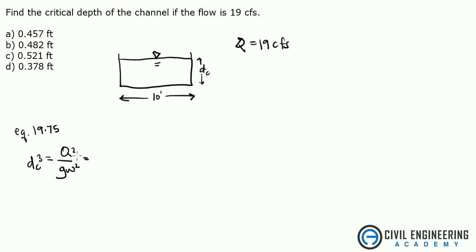That's it. We can solve for critical depth and we'll plug it in. So we get 19 CFS squared divided by 32.2 feet per second squared times our width is 10 feet squared.